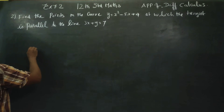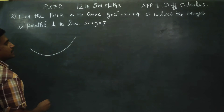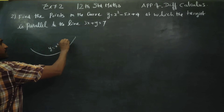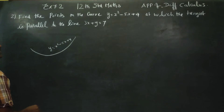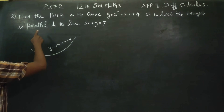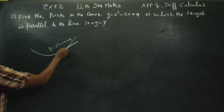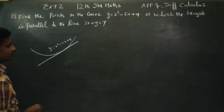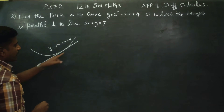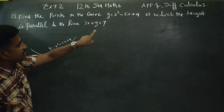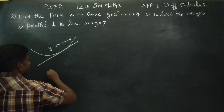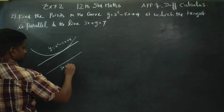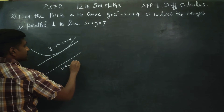This is a curve. The curve equation is y equal to x squared minus 5x plus 4. One tangent grazes the curve, and the curve is parallel to the given line. The line is 3x plus y is equal to 7.